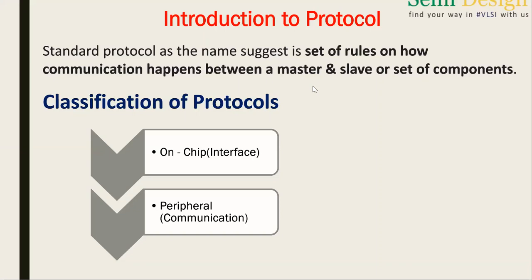In VLSI, we have different types of protocols. Coming to the classification of protocols, there are on-chip protocols and peripheral protocols. On-chip is also called an interface protocol. Peripheral protocols are nothing but communication protocols. If you have any idea on this, you can explain a few points on both of these.